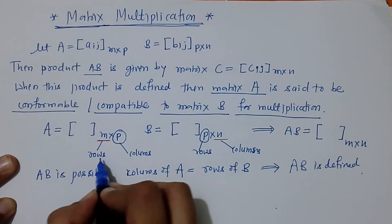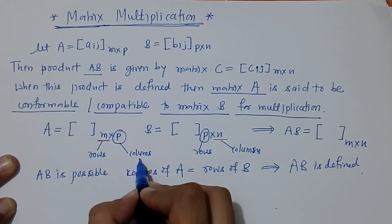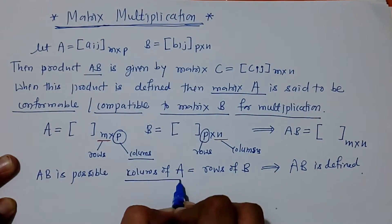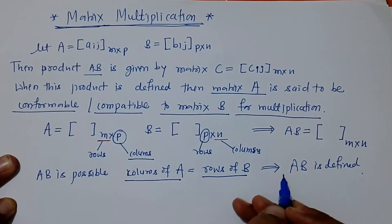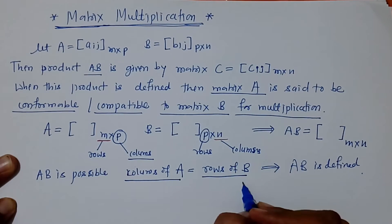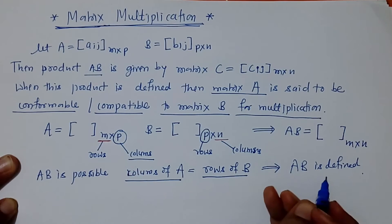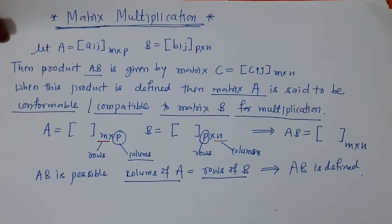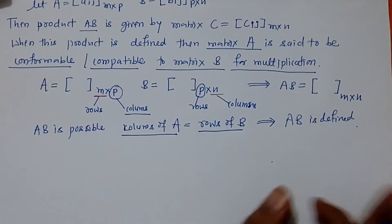So when columns of A is equal to the rows of B, only then is the product AB defined or product AB is possible.